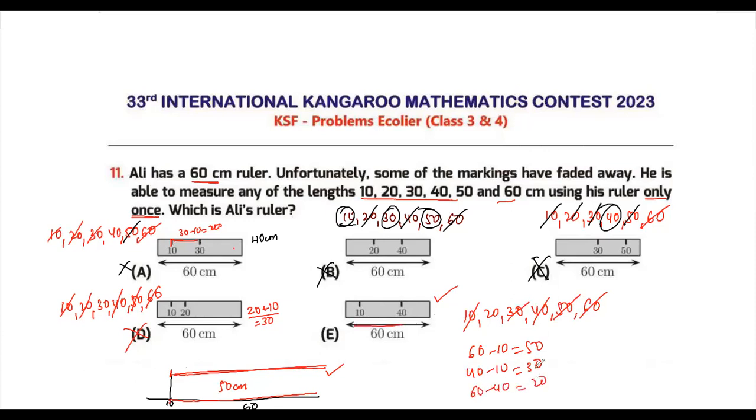And you do 60 minus 40, you'll be able to do 20. You'll be able to do all these measurements if you use the ruler which is mentioned in option E. I hope you understood this question.